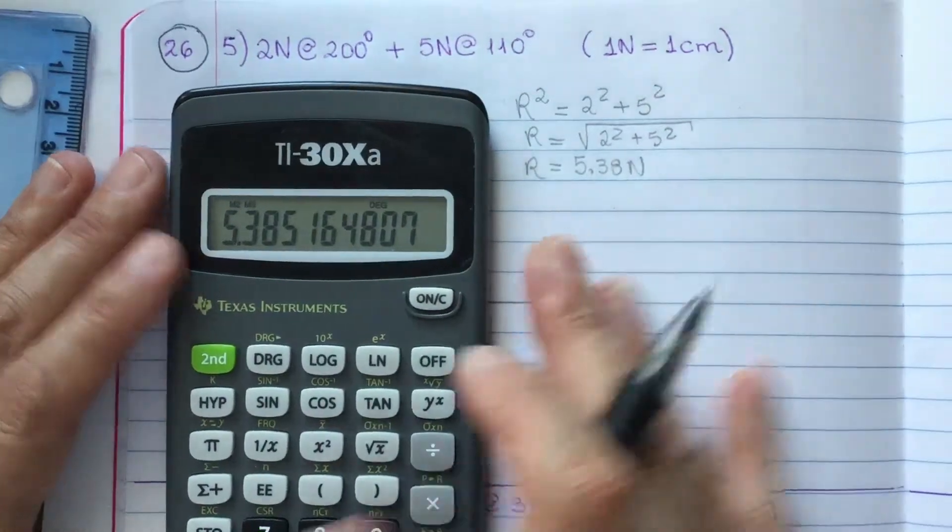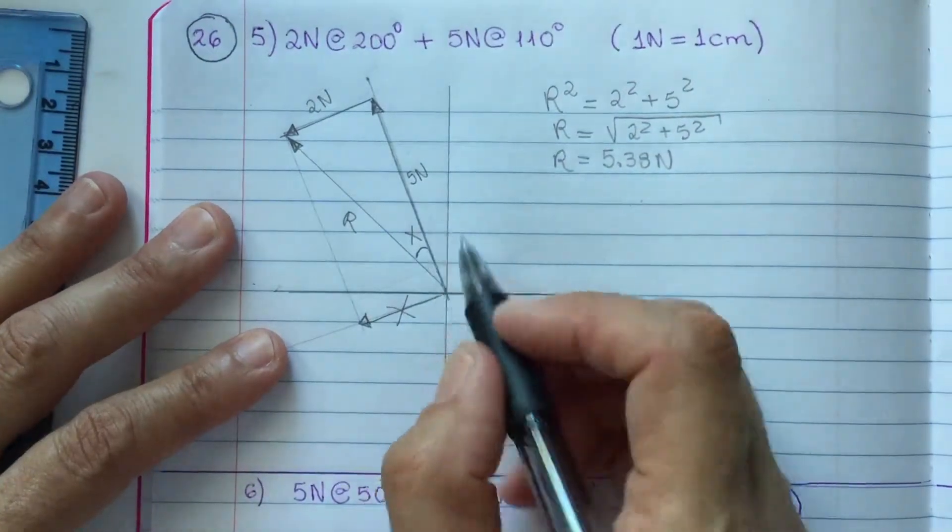So, this is the magnitude. Now, we need to find the direction of R.